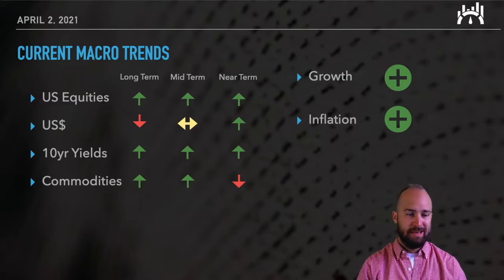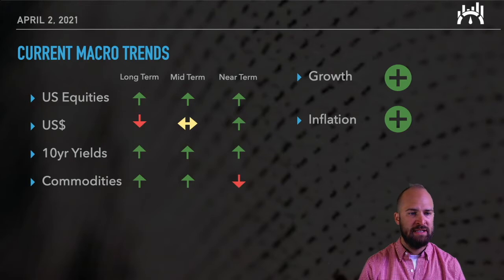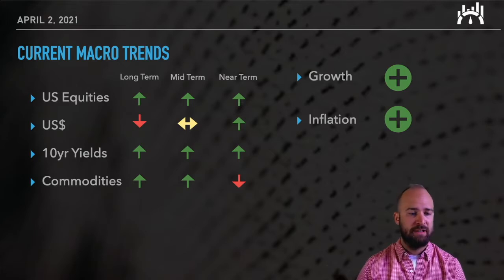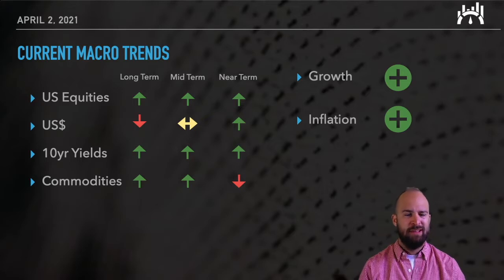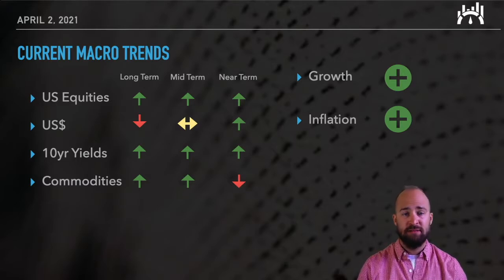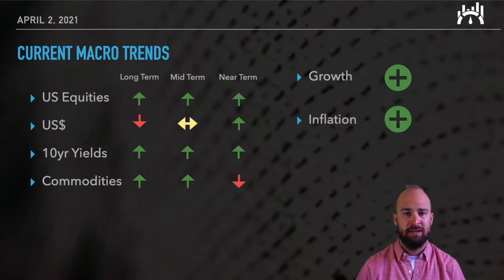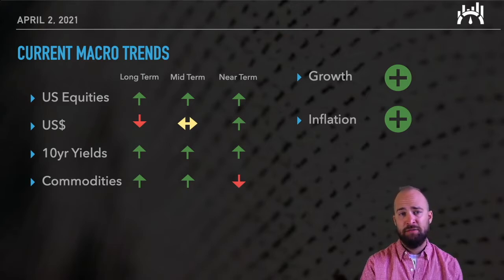Next let's talk about the US dollar. In my opinion, this is really at the core of what's happening in the market right now. This big inflection point — going from a long-term downtrend to a mid-term consolidation to a near-term uptrend — has wide-ranging implications for the rest of the financial markets. I say this all the time: if you get the dollar right, you get a lot of things right. A weakening dollar makes US businesses more attractive to foreign investors, so a down dollar is typically a tailwind for the US stock market.